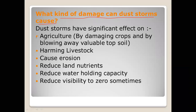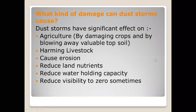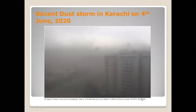Dust storms affect agriculture by damaging crops, harming livestock, causing erosion, reducing land nutrients, and reducing water holding capacity. They reduce visibility to zero sometimes — meaning we cannot see anything in the area where there is a dust storm. Here is an image of a recent dust storm in Karachi on 4th June 2020.